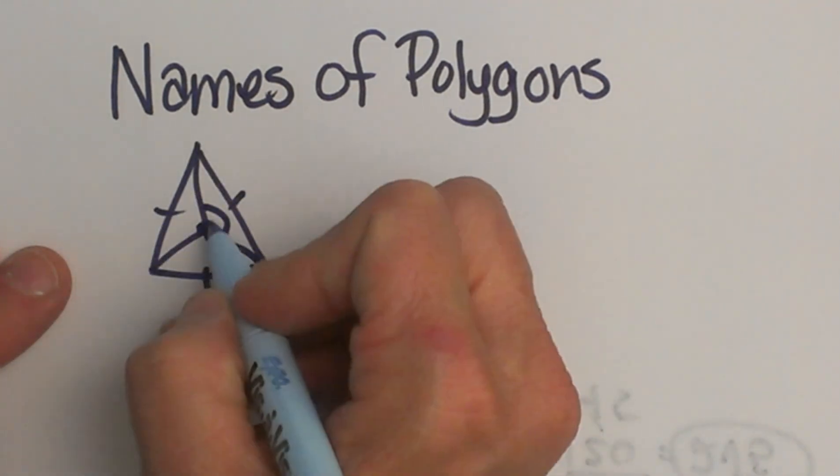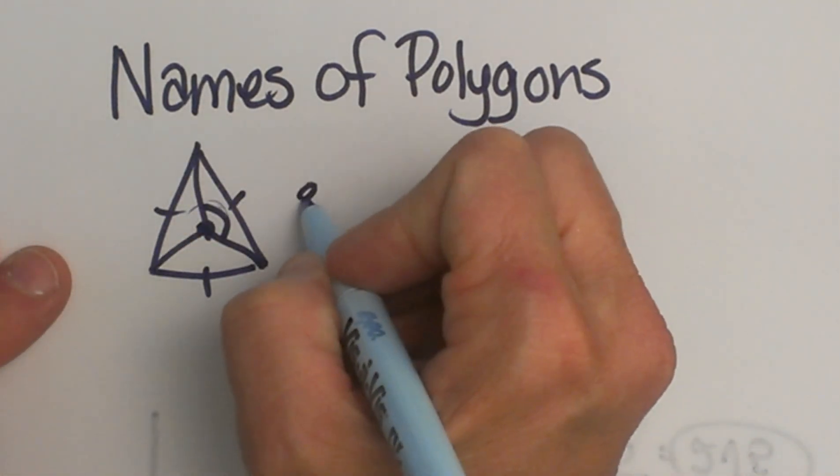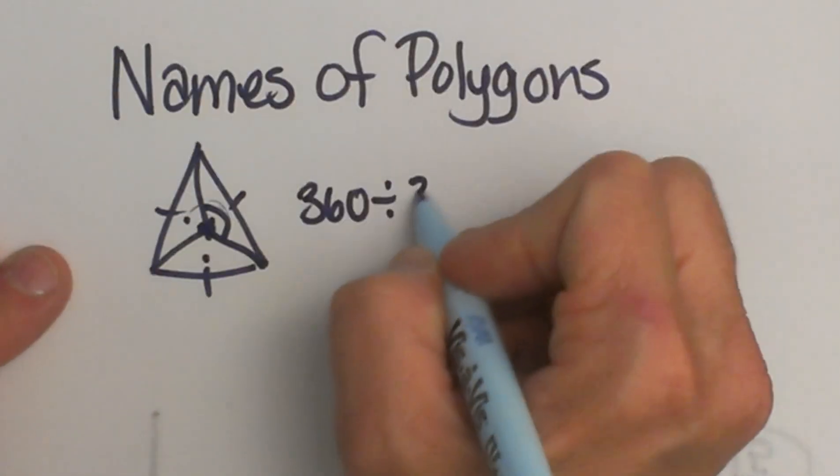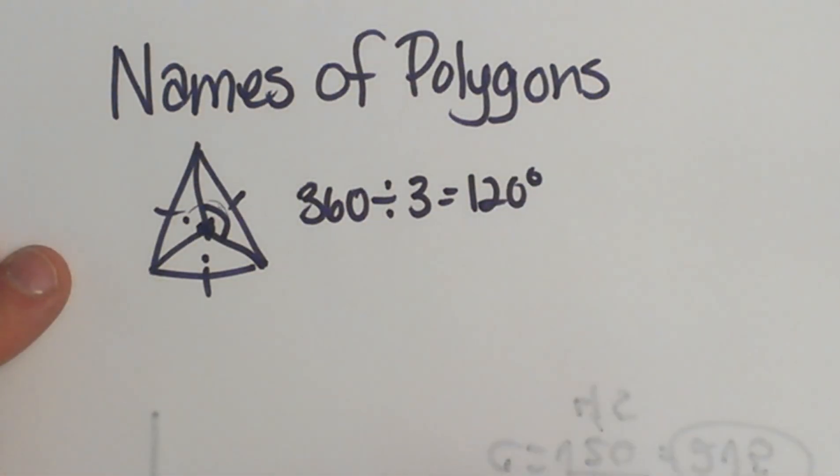We know in a circle the distance around that center is 360. So we are dividing into 1, 2, 3 equal parts, so we are dividing by 3. That's why that central angle is 120.